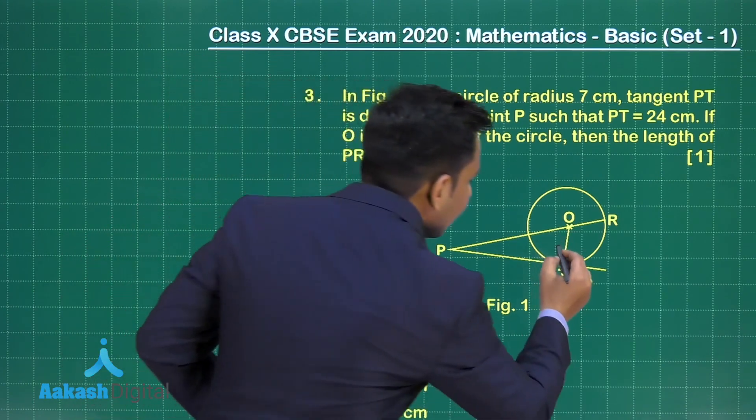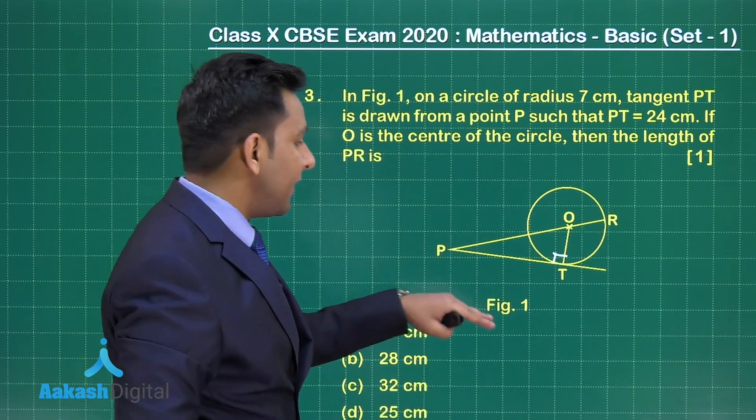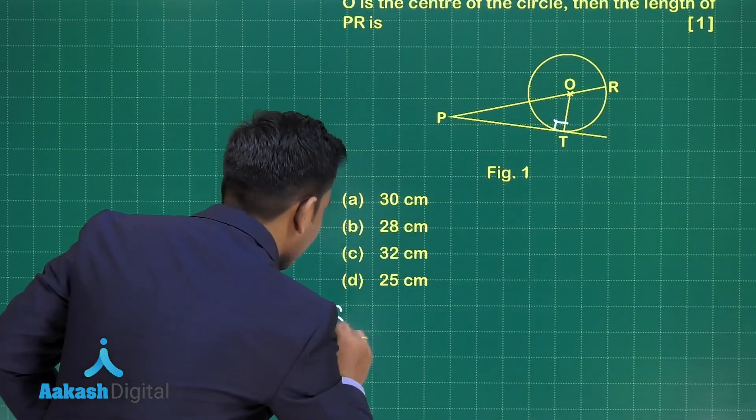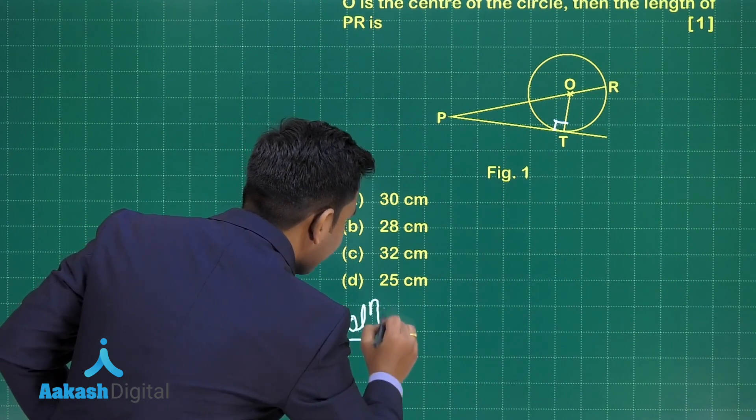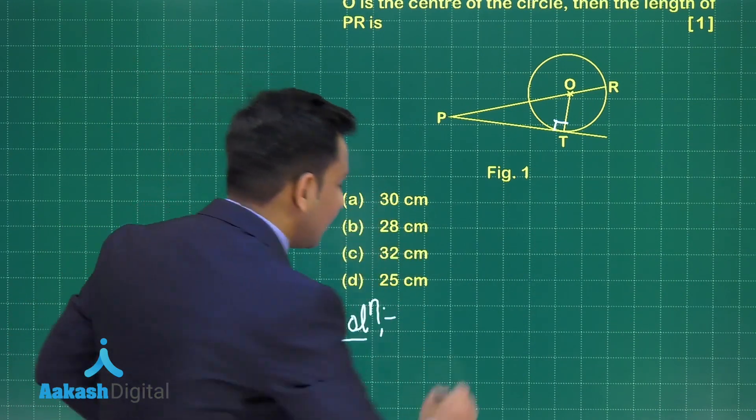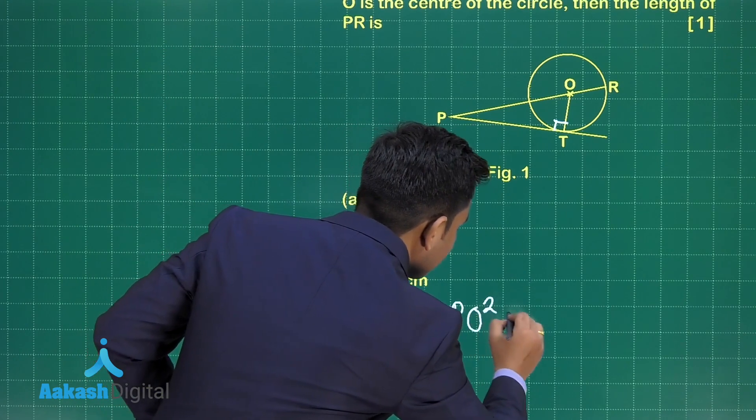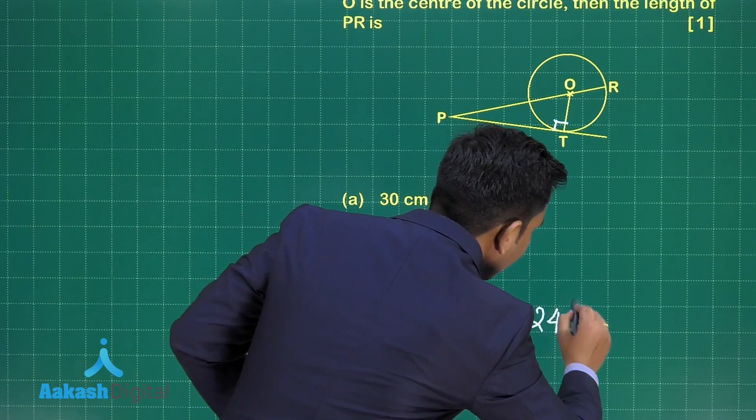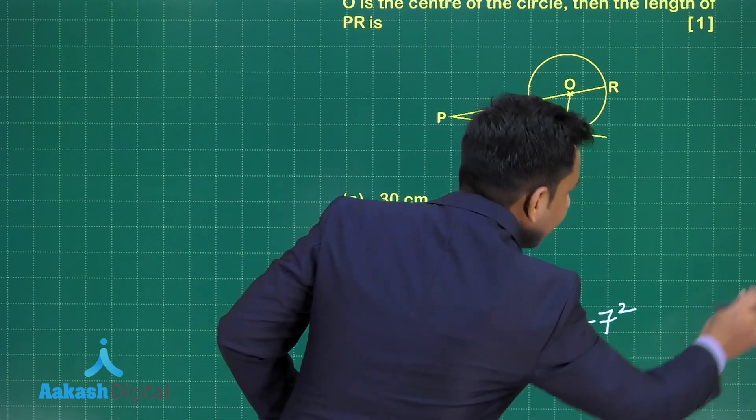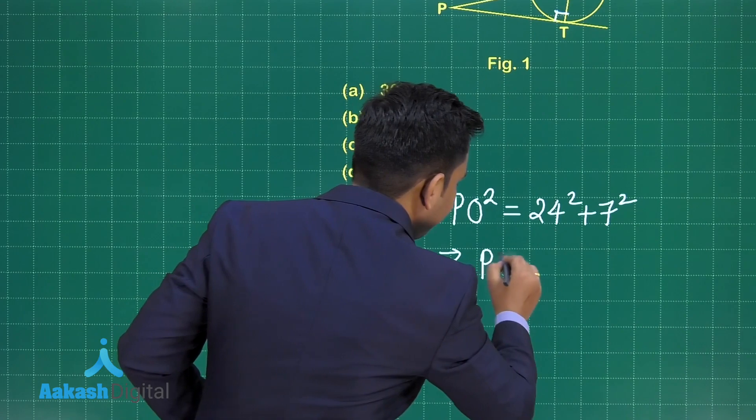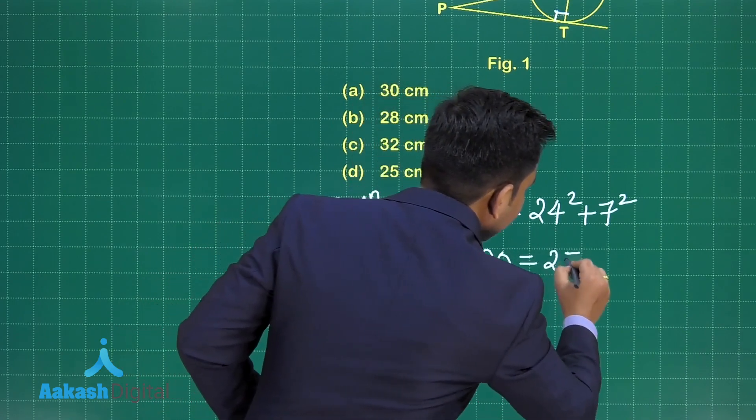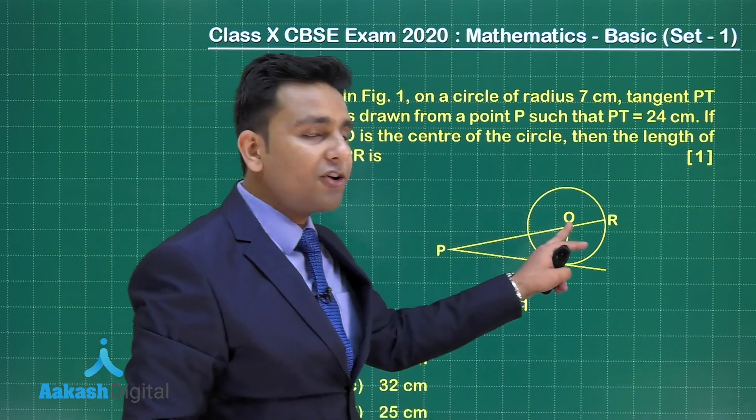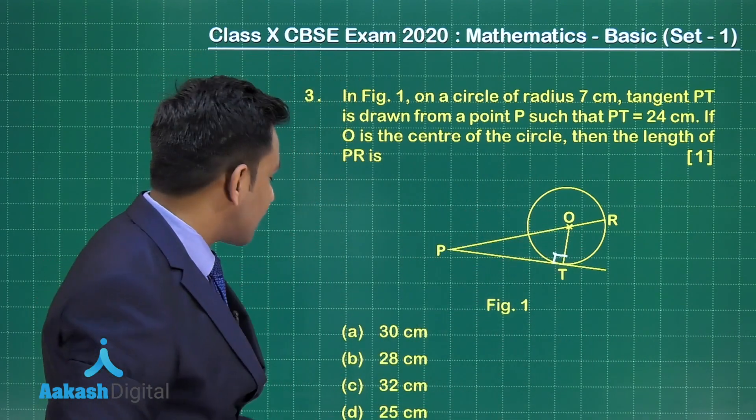Using this, we can conclude that OT, which is one of the radii of the circle, is perpendicular to this tangent PT. Now we can apply the concept of Pythagoras theorem in right triangle PTO. Then we write PO square, the square of hypotenuse, equals the sum of the squares of the remaining two sides. That is 24 square plus 7 square. When we simplify this, we get the value of PO equals 25 centimeter. That means the distance of this external point from the center of circle is 25. But what we have to determine in this question?